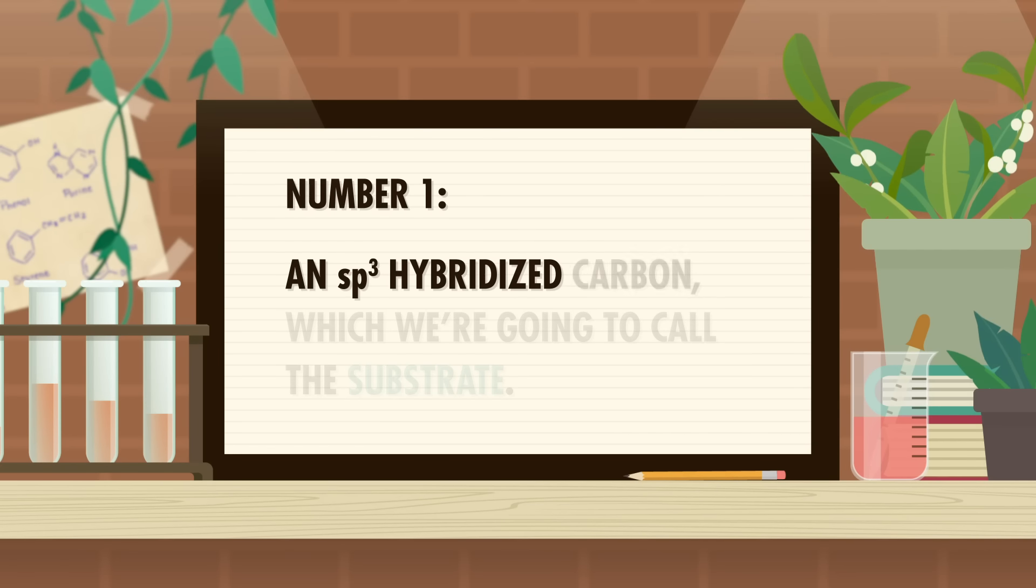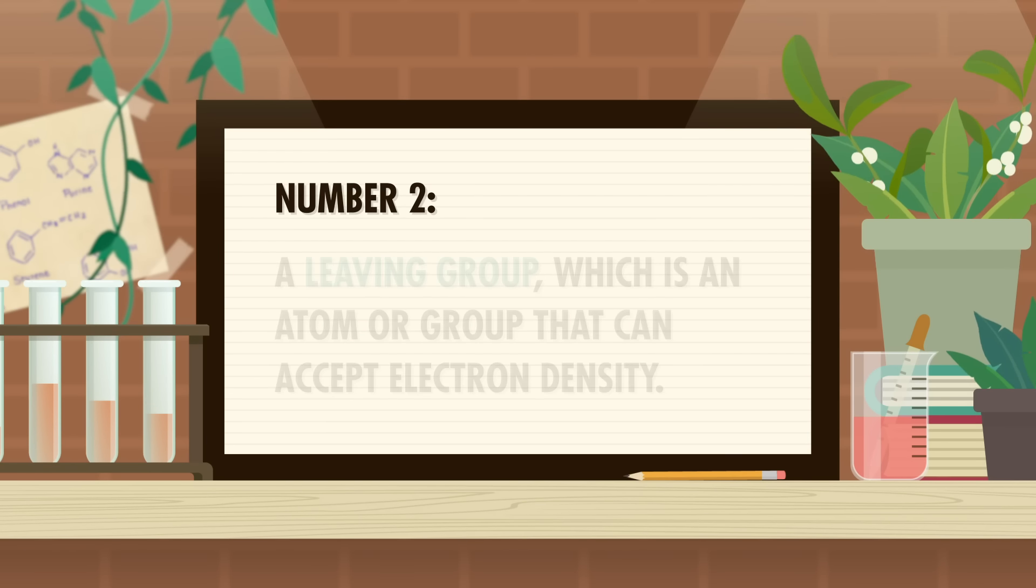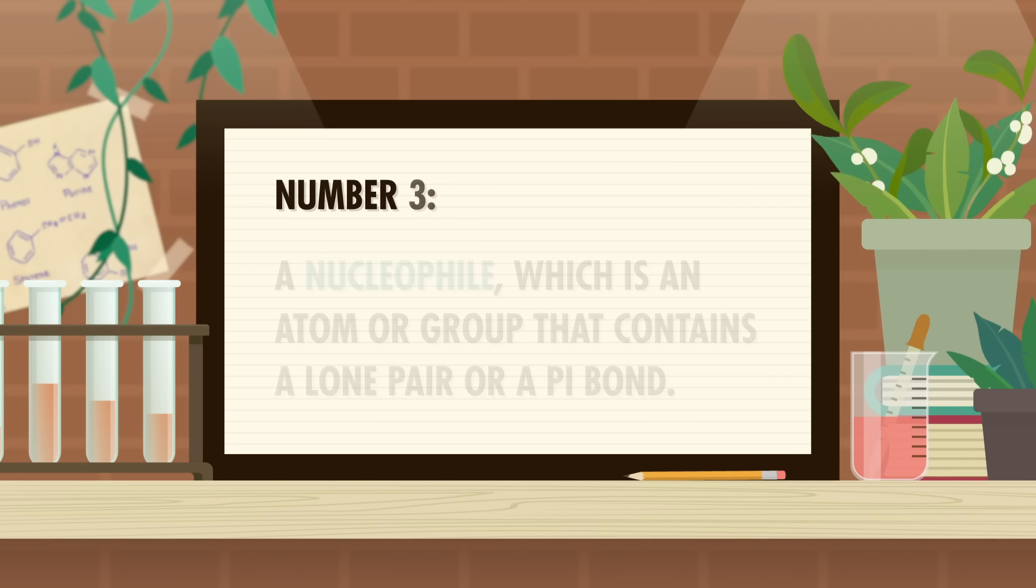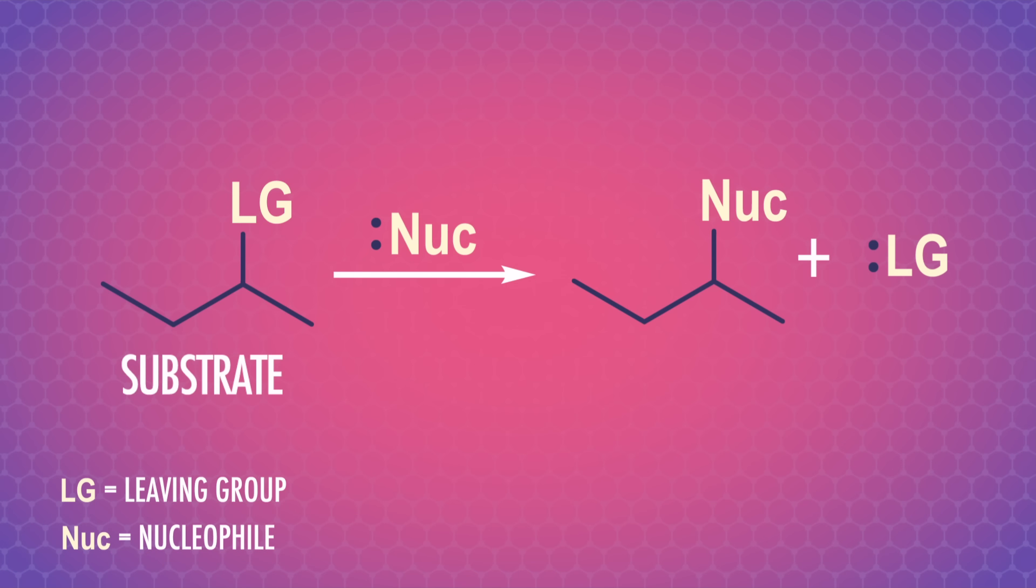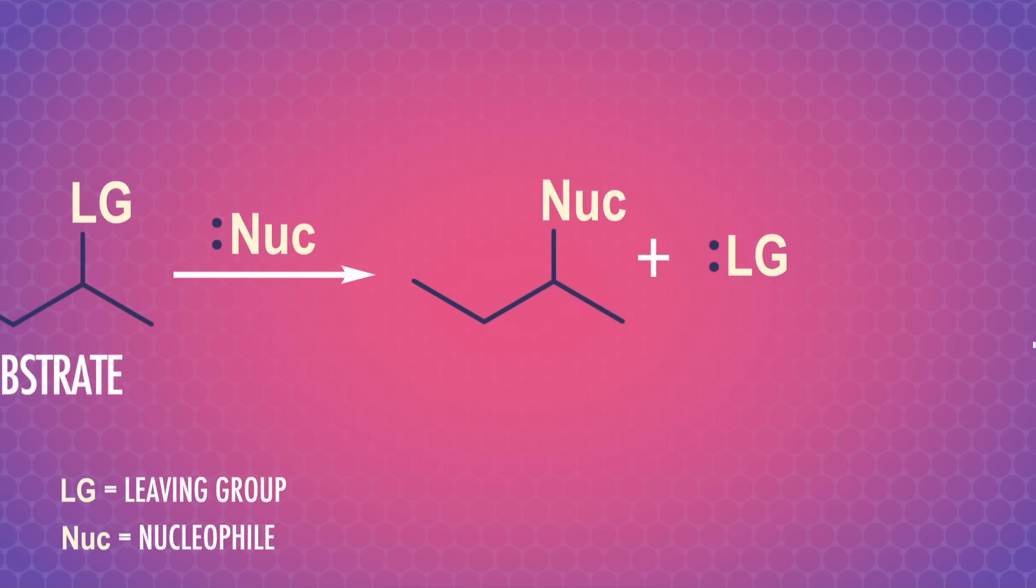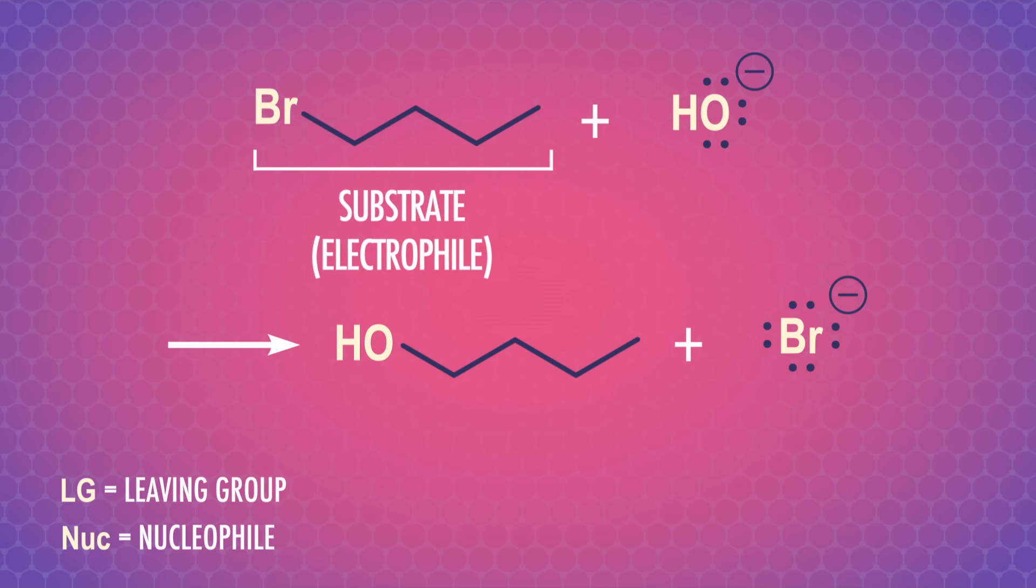To help us figure out organic substitution reactions, we need three things. Number one, an sp3 hybridized carbon, which we're going to call the substrate. Number two, a leaving group, which is an atom or group that can accept electron density. And number three, a nucleophile, which is an atom or group that contains a lone pair or a pi bond. This is the general model of a substitution reaction with placeholders. We can add in some real atoms and molecules here. The substrate is 1-bromobutane, which switches its bromide dance partner for hydroxide. In this reaction, the leaving group is a bromide ion, and the nucleophile is a hydroxide ion.